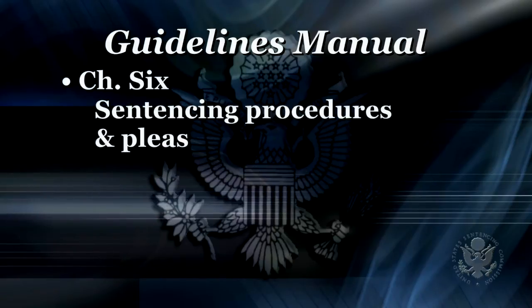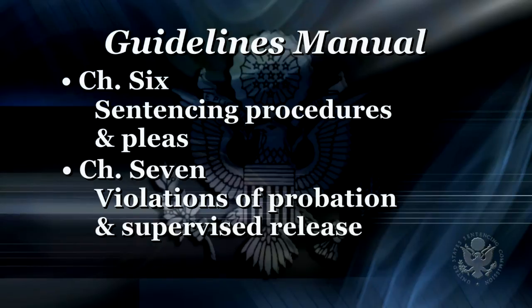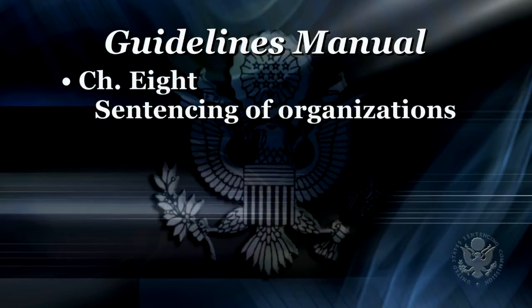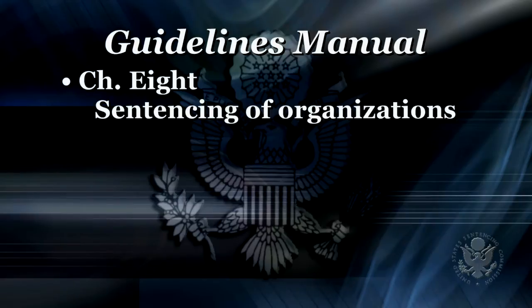Chapter 6 provides information on sentencing procedures and pleas. Chapters 7 and 8 are not used in the initial calculation of a defendant's guideline range for the instant federal offense. Chapter 7 provides guidance to the court in the determination of penalties for violations of supervised release and probation. Chapter 8 addresses the sentencing of organizations rather than individual defendants. In sum, Chapters 1 through 6 of the guideline manual provide the necessary information the court will use to determine an appropriate sentencing range for a Federal criminal defendant.